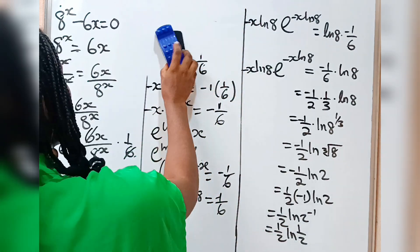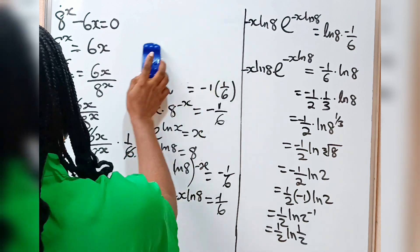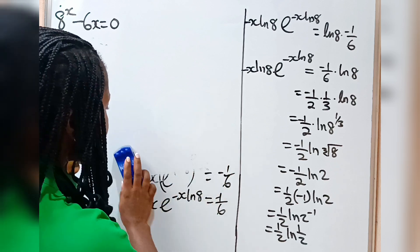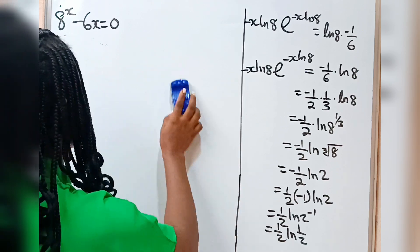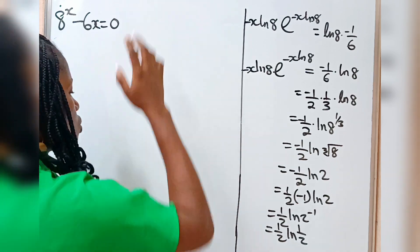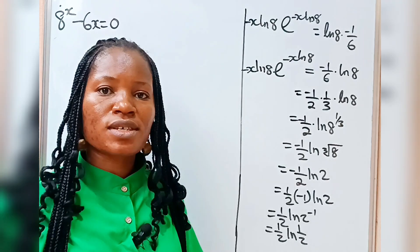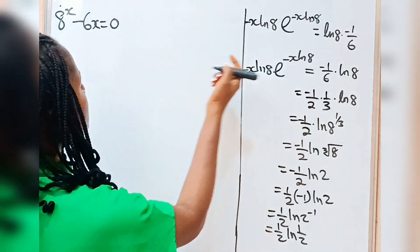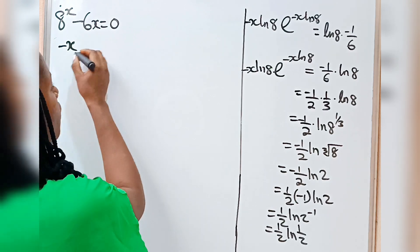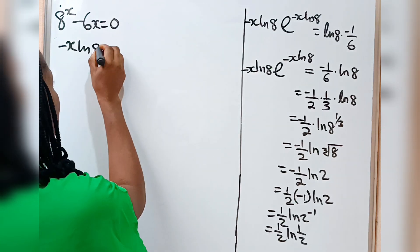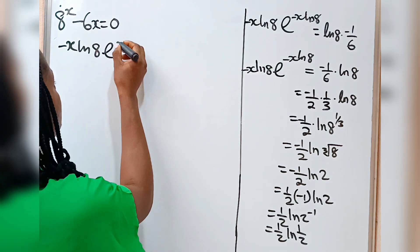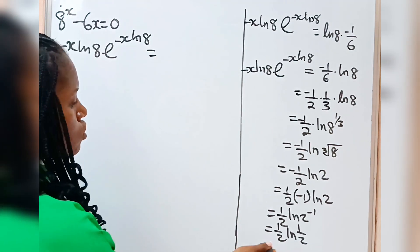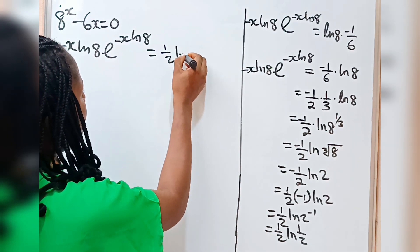Permit me to clean this side of the board. I hope you are enjoying this video, because I am. At the end of this video we are going to prove that what we got is actually right. So this is where we are. I am going to repeat this in order to carry it over. So minus x ln 8 times e to the power of minus x ln 8 is equal to 1 over 2 times ln of 1 over 2.